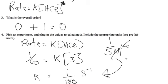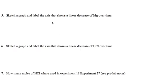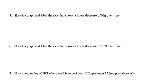So was that number four? Yeah, it was. Five. Sketch a graph and label the axis that shows the linear decrease of magnesium over time. So magnesium was zero.